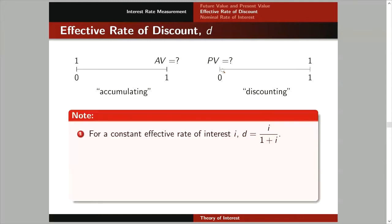Let's have more notes. Note number one: for a constant effective rate of interest I, D is equal to I over 1 plus I. Please memorize this, or you may want to prove this. Totoo ba na ang D is equal to I over 1 plus I? If you want to prove this, balikan nyo yung relationship ng D at saka ng V — 1 minus D is equal to V — and then you try to write V in terms of I, and then you can show that D is really equal to this expression.